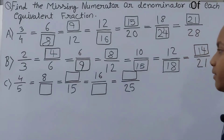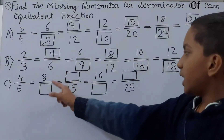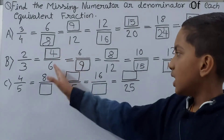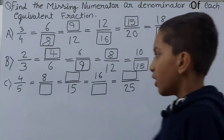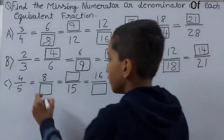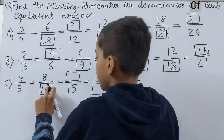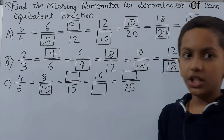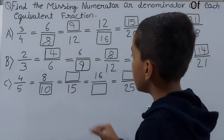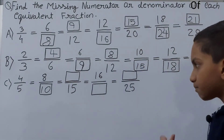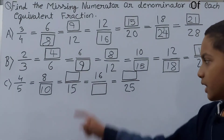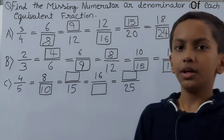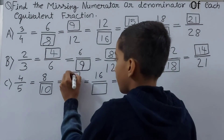Next question gives us 4/5. First equivalent: 8/□ — we have the numerator 8. 4 times 2 is 8, so 5 times 2 is 10. So 10 goes in the denominator. Next: □/15 — we have the denominator 15, and our denominator is 5: 5 times 3 is 15. So 4 times 3 is 12, meaning 12 goes in the numerator.